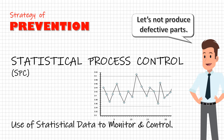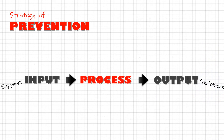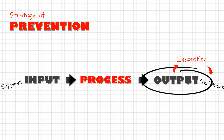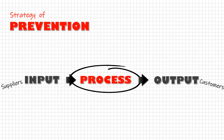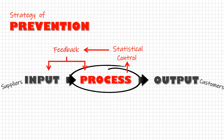If you remember this process cycle, earlier our focus was on the output. Now with prevention control, we want to shift our focus to the input and process, with the assumption that if my input and process is right, the output will definitely be right. So we monitor the process with statistical methods and use the feedback to control the inputs and process parameters to maintain the overall quality of the output.